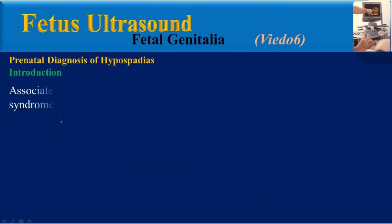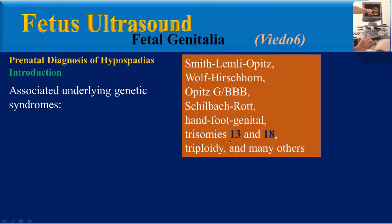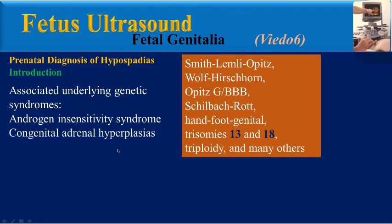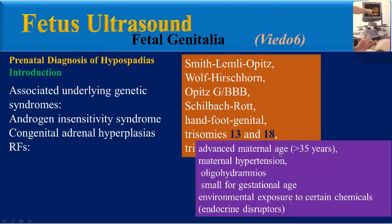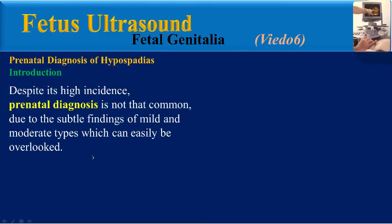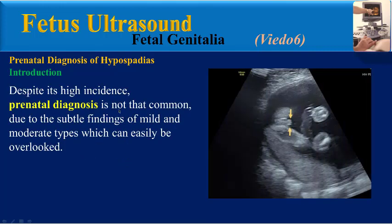There are many syndromes that may be associated with hypospadias, including trisomies 14 and 18, androgen insensitivity syndrome, and congenital adrenal hyperplasia. There are also some risk factors related to hypospadias, including advanced maternal age and maternal hypertension. Despite its high incidence, prenatal diagnosis is not that common, due to the subtle findings of mild and moderate types which can easily be overlooked.